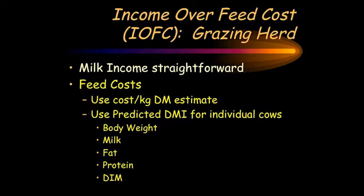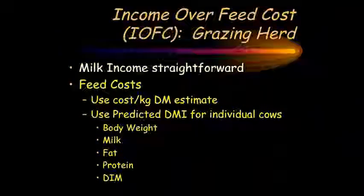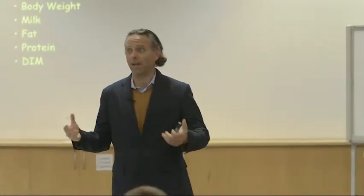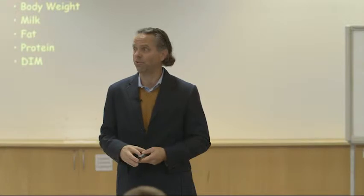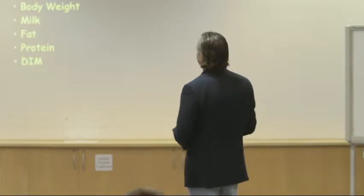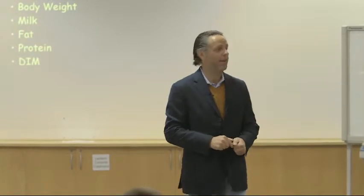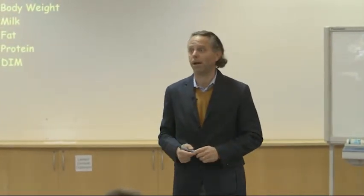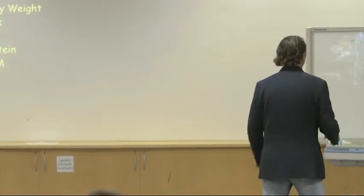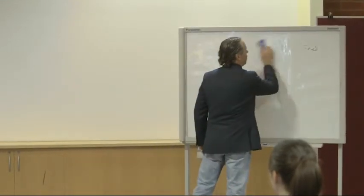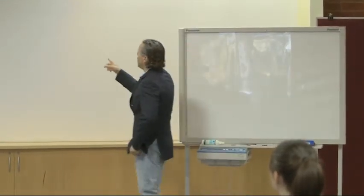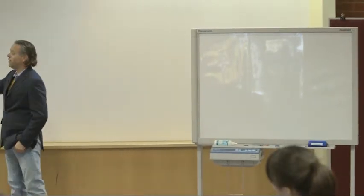For feed costs, I think you need to use a cost per kilogram estimate on the total dry matter — what your total ration, including your grass, costs per kilogram of dry matter. I'd probably use a market-type indicator, something that a TMR-type herd might have, like right now 30 cents per kilogram of dry matter. Then estimate the dry matter intake that your cows should be eating biologically. We use an equation from the NRC, a research publication, which predicts dry matter intake for individual cows based on body weight, milk, fat, protein, and days in milk.